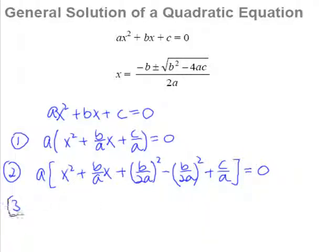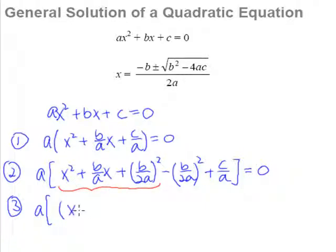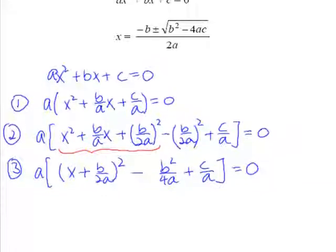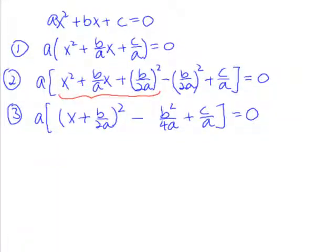Now we are at the final step of completing the square, and that will be to recognize that the first three terms here now become a perfect square. These three terms can now be compressed into a perfect square, which is x plus b over 2a, whole thing squared. Whatever is left over we have no choice but to just expand it and leave it alone. Let's scroll up a little bit for more space.